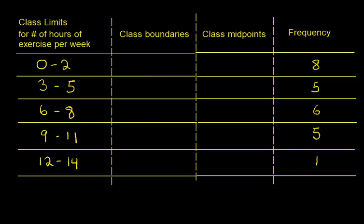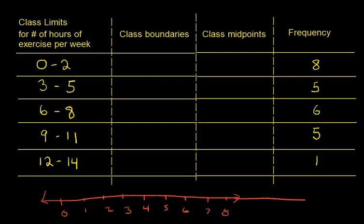So what's going on here? First, let's talk about class boundaries. If you consider on a number line, here is 0, 1, 2, 3, 4, 5, 6, 7, 8. I'm actually going to extend my number line, so 8, 9, 10, 11, 12, 13, 14, all the way out to 15.